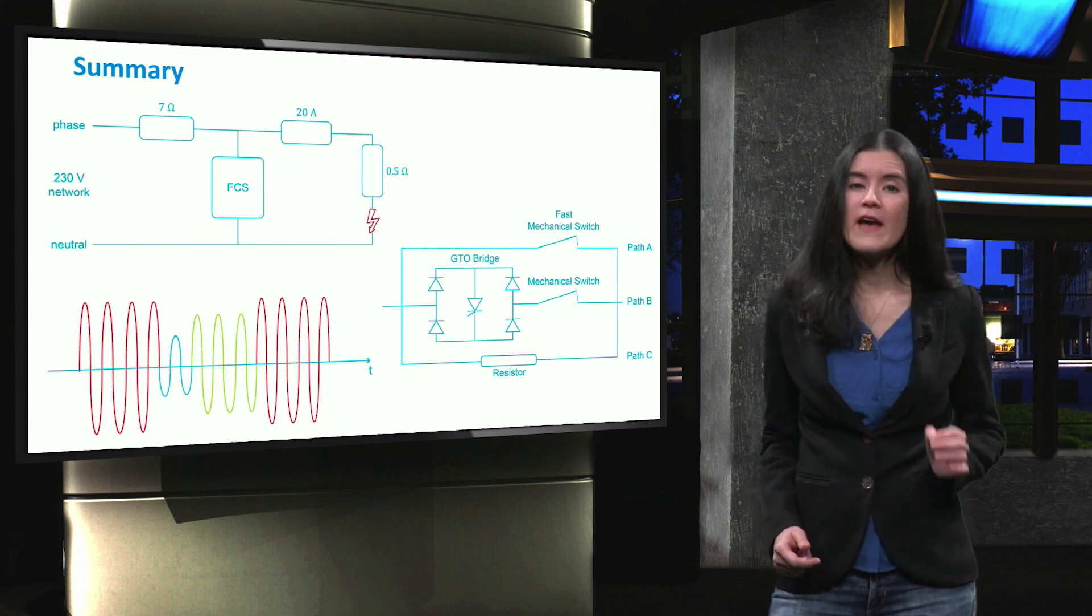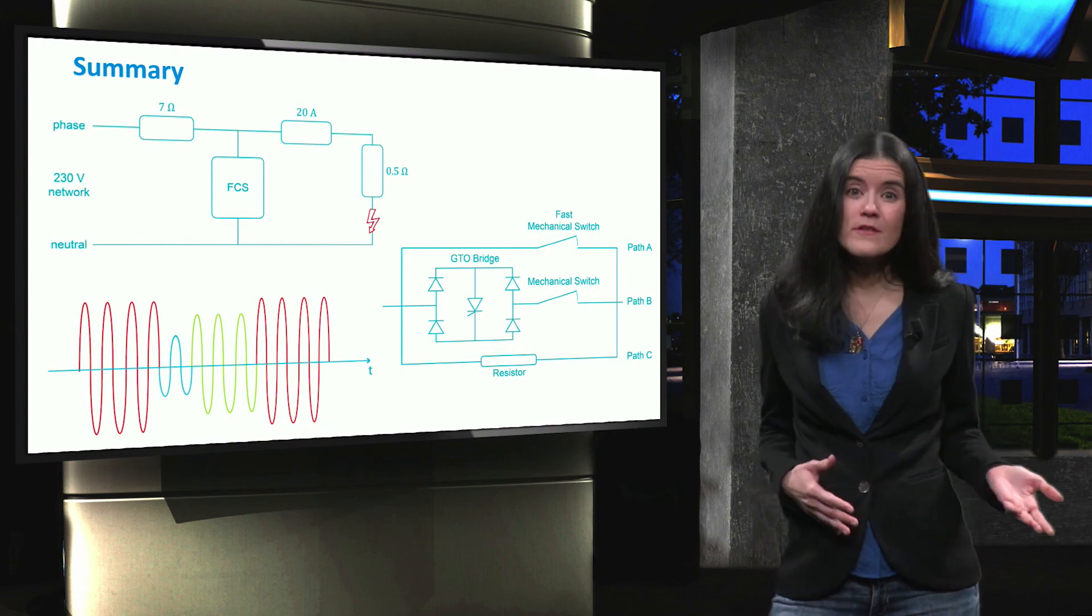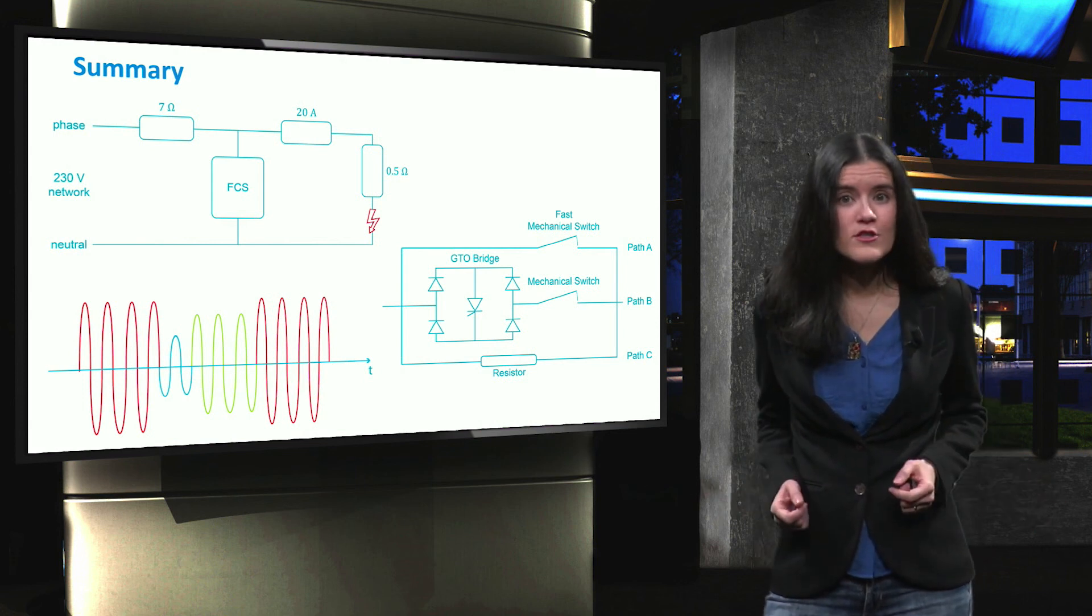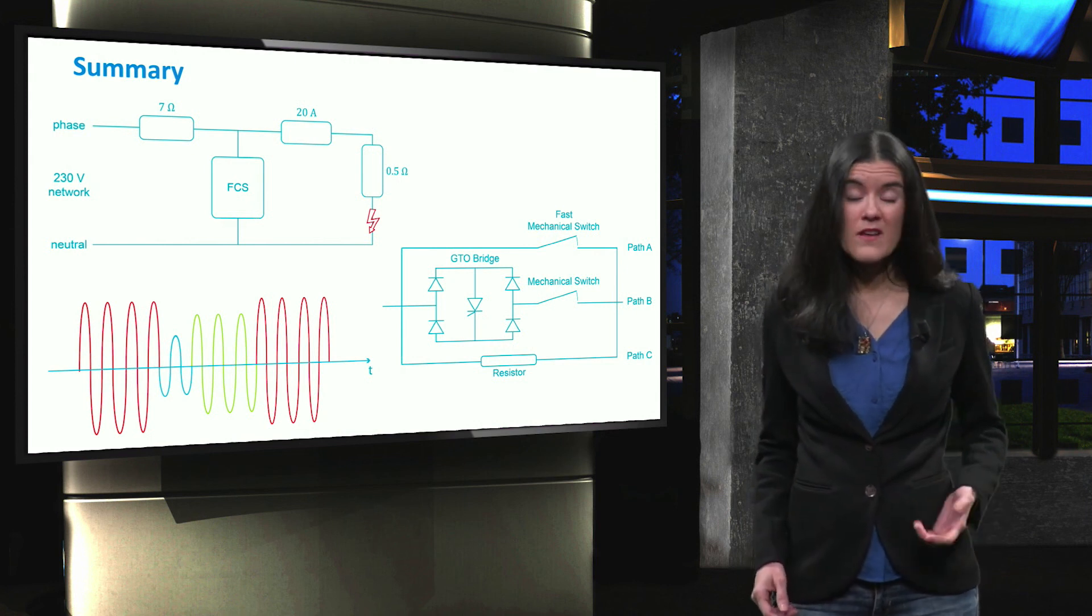Passive solutions have the advantage of always being operational, but generate losses due to their high impedance, whereas active solutions are more efficient and act only during faults. They need to be replaced after a fault.